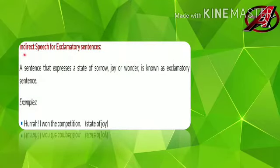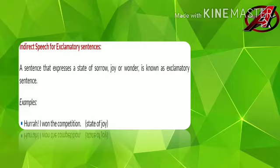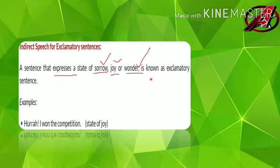Coming to indirect speech for exclamatory sentences. A sentence that expresses a state of sorrow, joy, or wonder is known as an exclamatory sentence. In imperative sentences, the sentence expresses a request, command, or order. But here, it expresses a state of sorrow, joy, or wonder. If it expresses these types of emotions, then it is an exclamatory sentence.